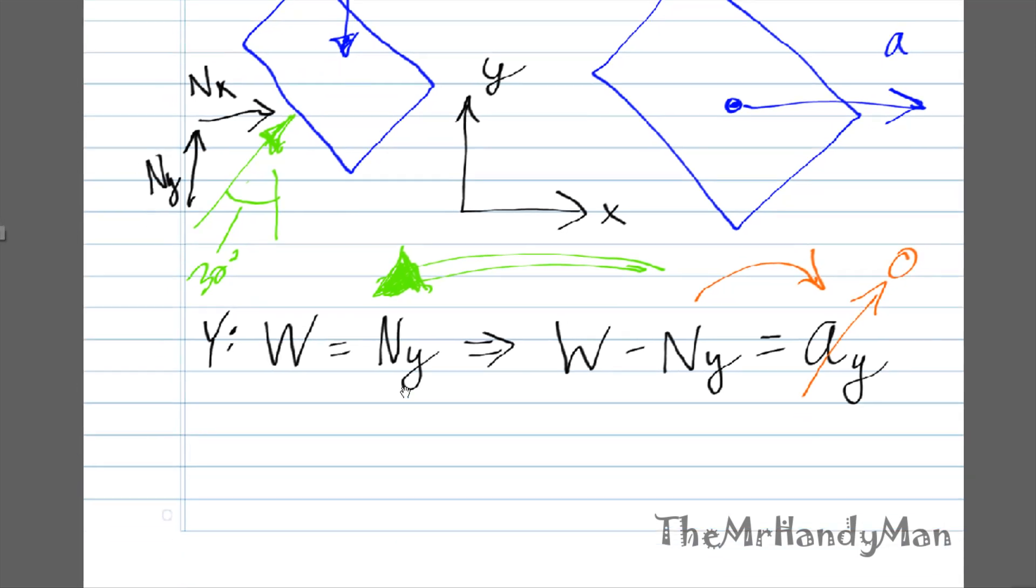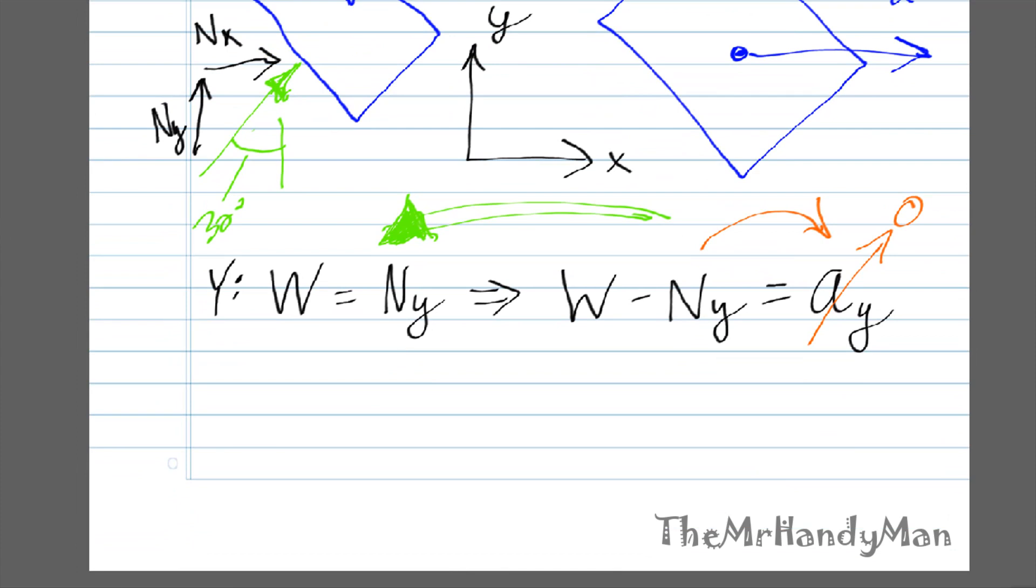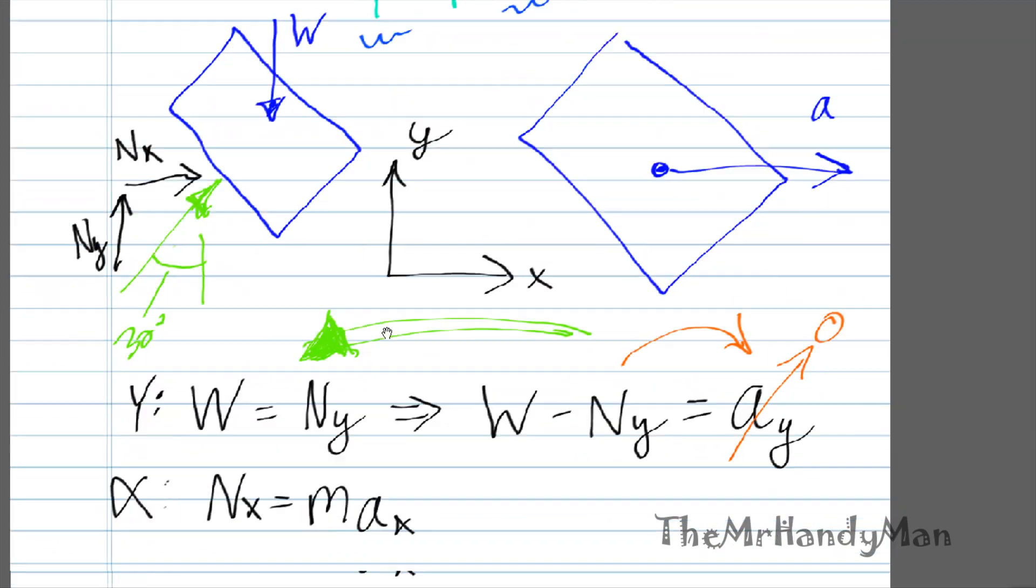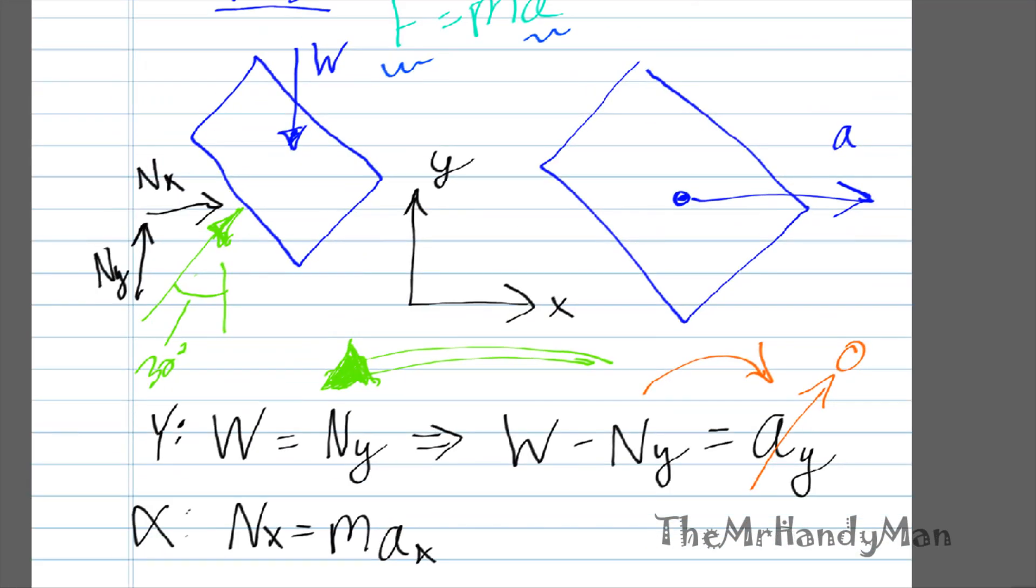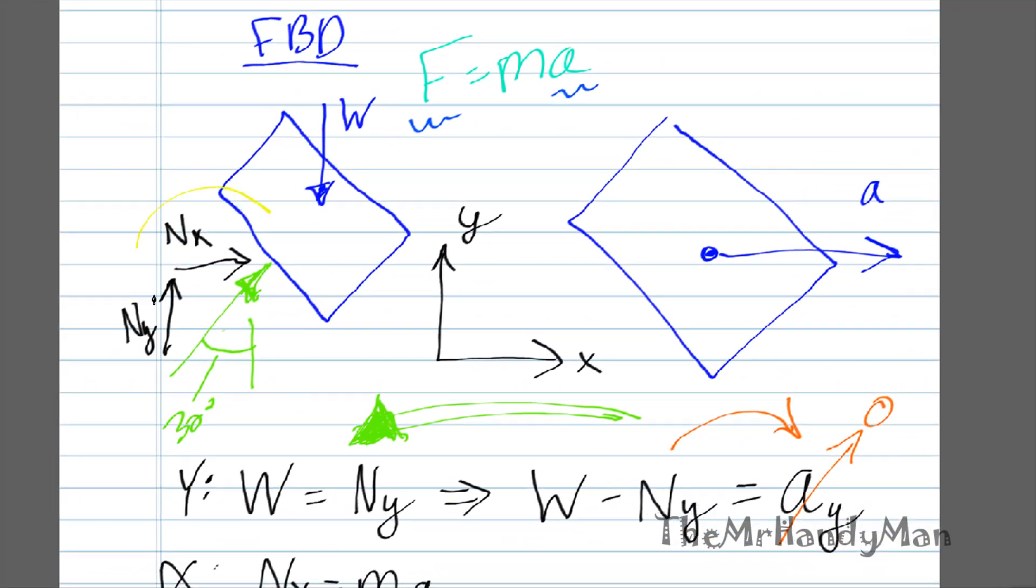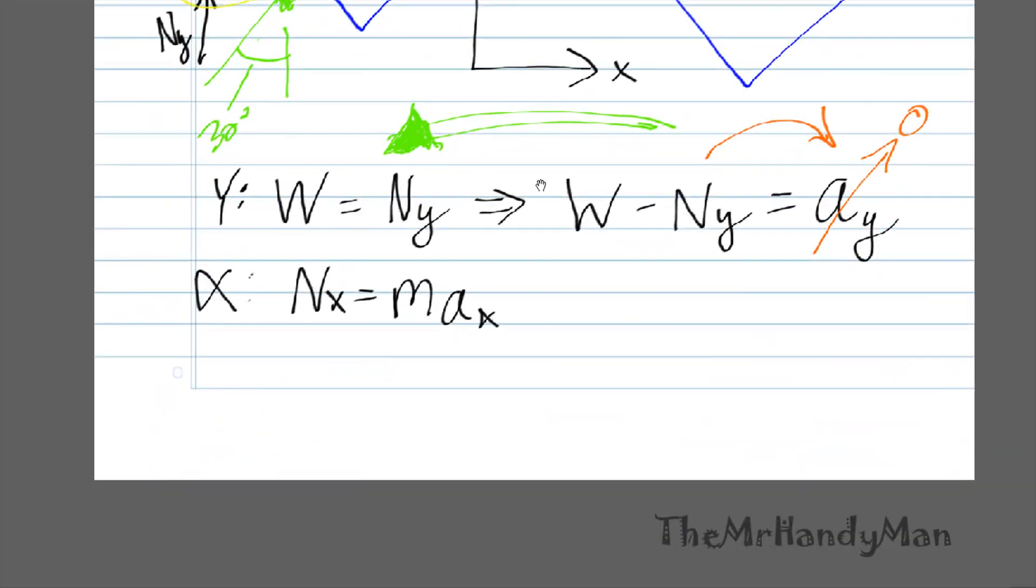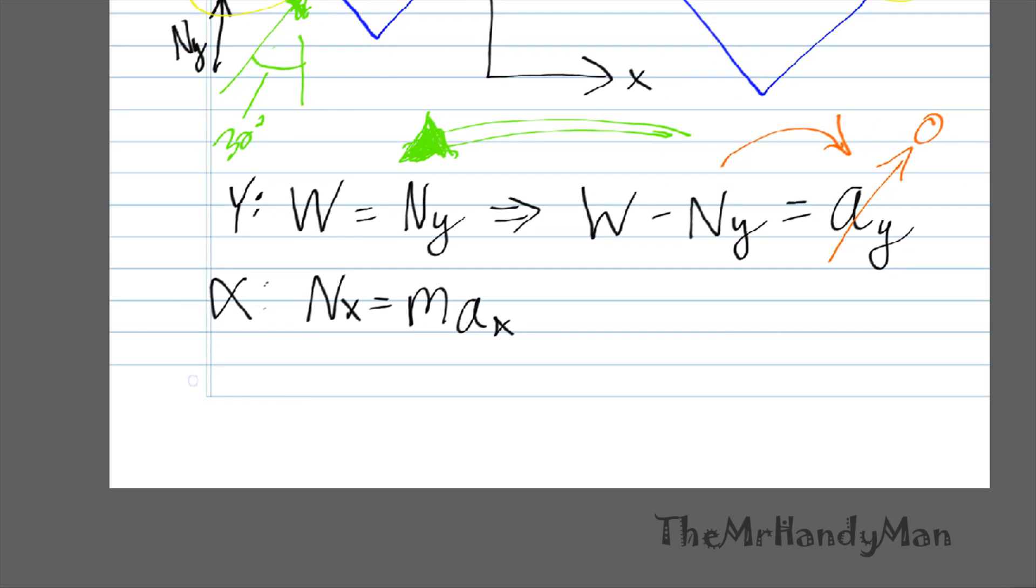What about in the x direction? We know that Nx is equal to mass times acceleration x, because that's the only things that are going in the x direction. So we know that Nx equals mass times acceleration, just following Newton's law. So Nx is equal to N sin 30 degrees.